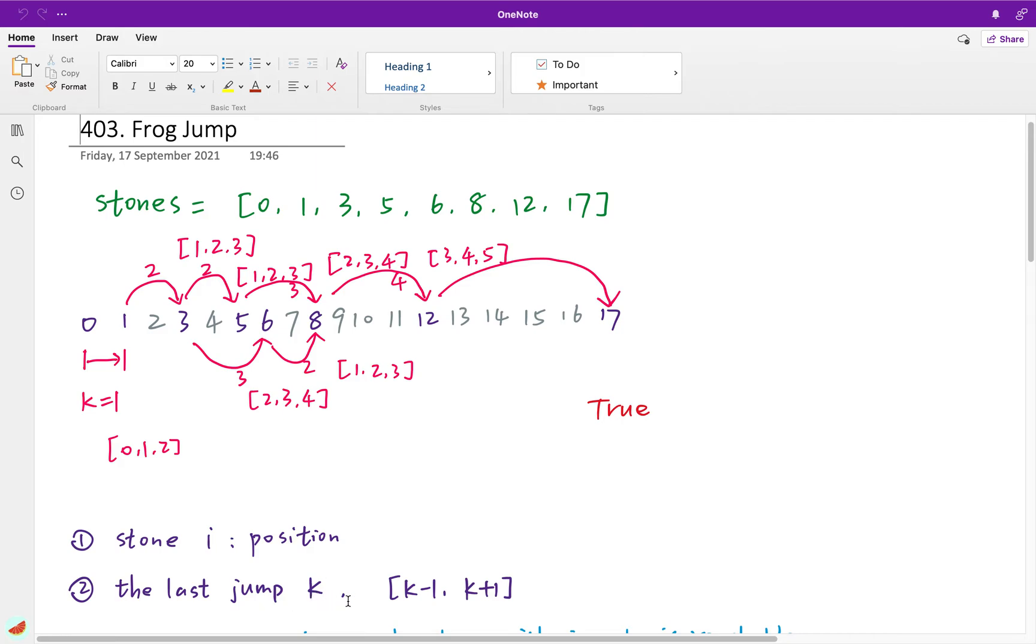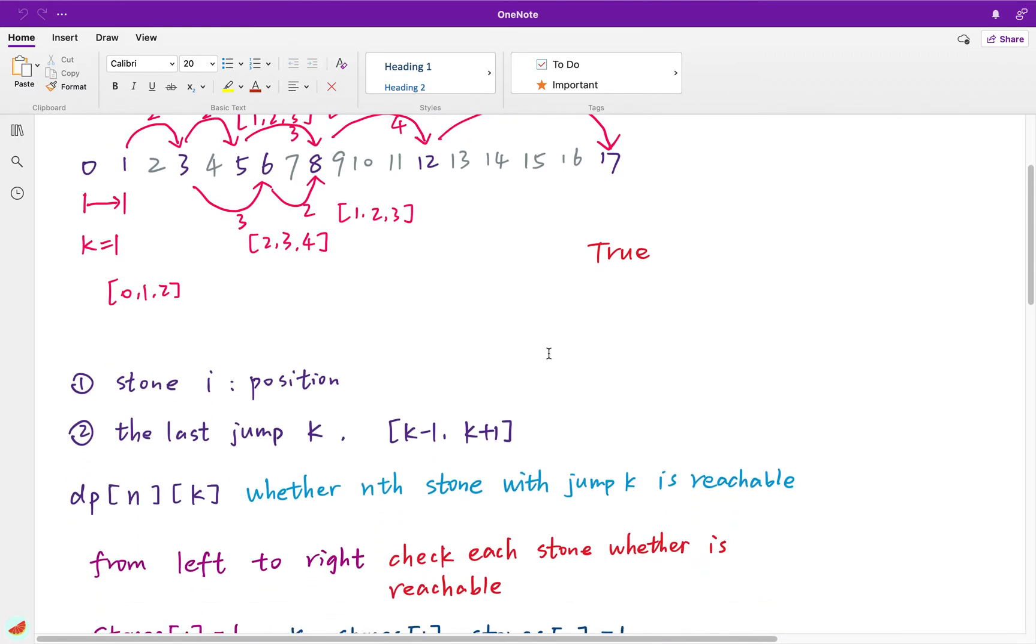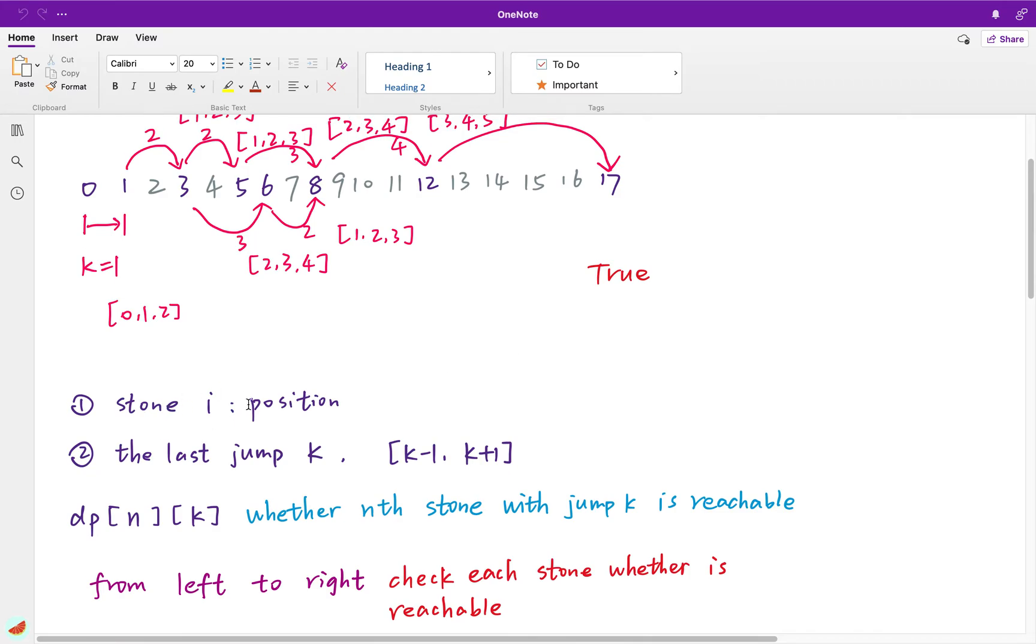Because if we know last jump k, we know the next jump will be k-1, k, or k+1. So we can see next stone. So based on these two important things, we can define a DP array n by k. It represents whether we can land on the ith stone with the jump k.